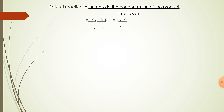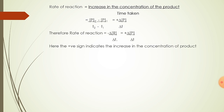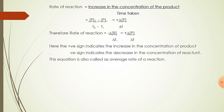This is also equal to positive delta[P] divided by delta T. We use a negative sign for the reactant and a positive sign for the product. Positive sign indicates increase in the concentration of the product, and negative sign indicates decrease in the concentration of the reactant. The overall rate of reaction is: minus delta[R] divided by delta T, or plus delta[P] divided by delta T. This equation is called the average rate of a reaction.